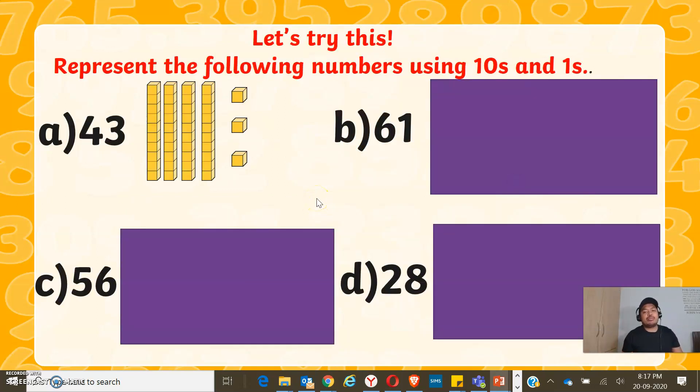Now represent the following numbers using tens and ones. Letter A, 43, is already done for you. Try to make it your own for letter B, C, and D. Pause the video and write your answers.